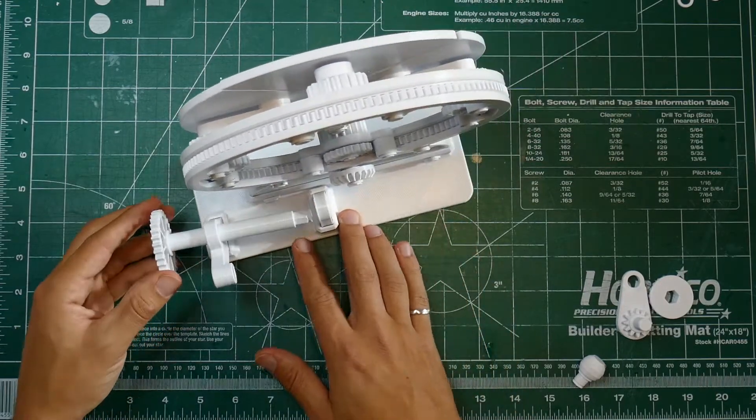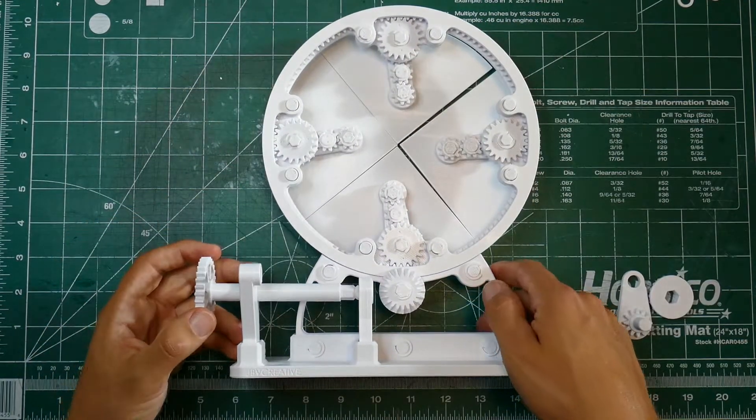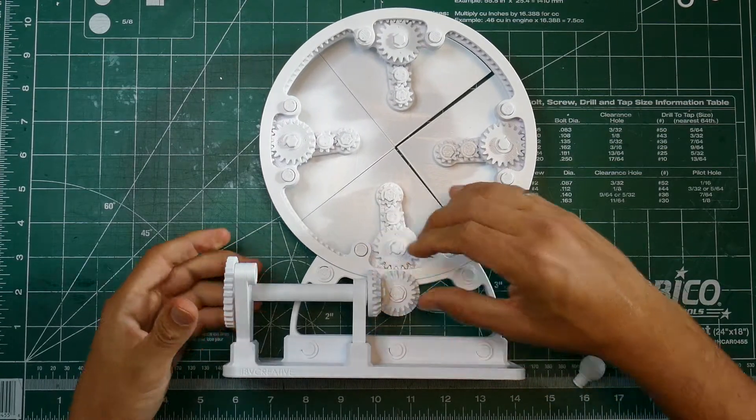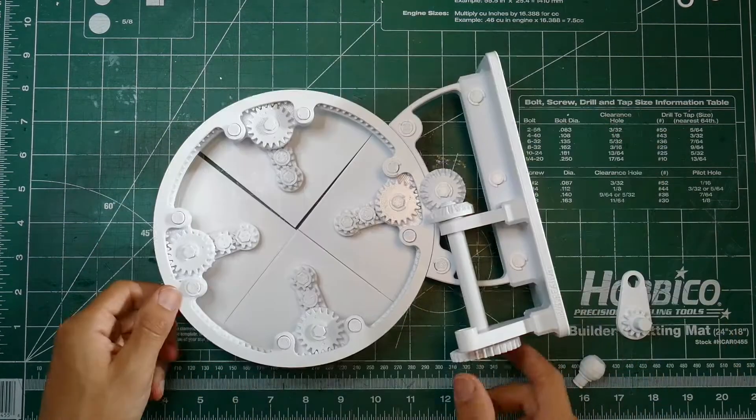Now you can grab your long shaft gear, slide that in. Grab the other bevel gear, place that into its position and then slide the shaft right in and C-clamp that into place.